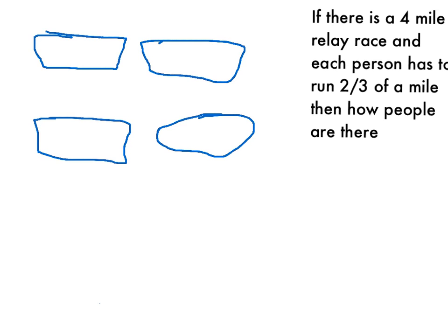Now I need to cut them into two-thirds. And there is two-thirds of a mile. So if each person has to run two-thirds of a mile, then I do this. Each person gets two-thirds.